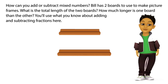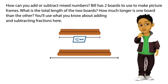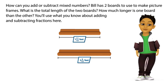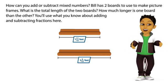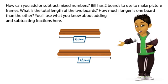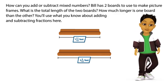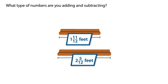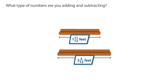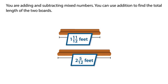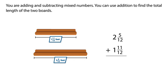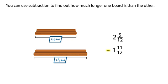How can you add or subtract mixed numbers? Bill has two boards to use to make picture frames. What is the total length of the two boards? How much longer is one board than the other? You'll use what you know about adding and subtracting fractions. You are adding and subtracting mixed numbers. You can use addition to find the total length of the two boards, and subtraction to find out how much longer one board is than the other.